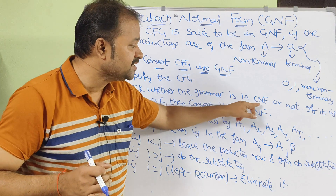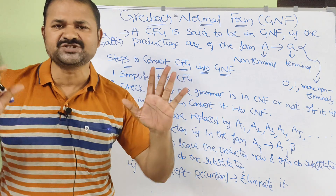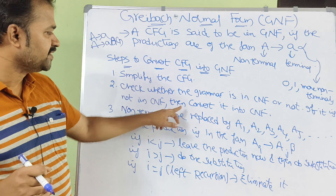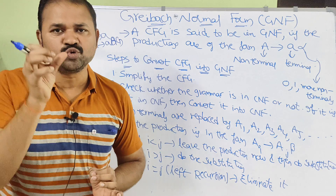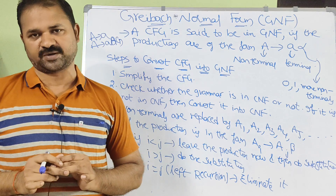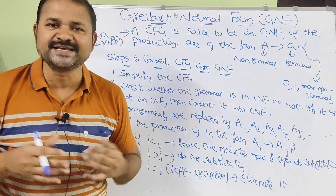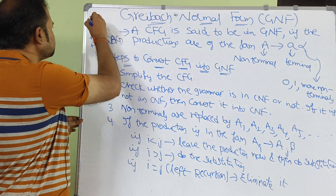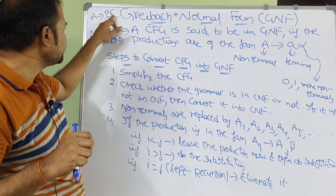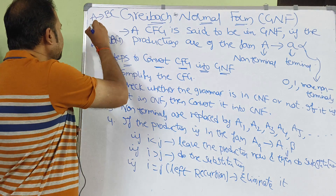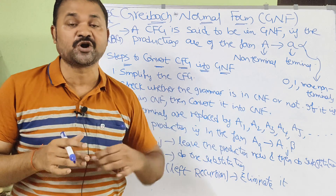The second step is to check whether the grammar is in Chomsky Normal Form (CNF) or not. If it is already in CNF, there is no problem; otherwise, convert the CFG into CNF. We can perform GNF conversion only when the productions are in CNF. In CNF, a non-terminal produces exactly two non-terminals, or a single terminal.